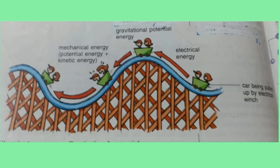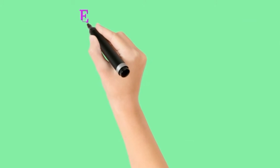When the cars are released they start to fall, and their gravitational energy is changed into kinetic energy. There is always some friction between the car and the rails and between the cars and the air, so friction causes some of the mechanical energy to be converted into heat energy. This diagram shows us a clear conversion of energy — the car being pulled up by the electrical winch and the energy converted into gravitational energy.